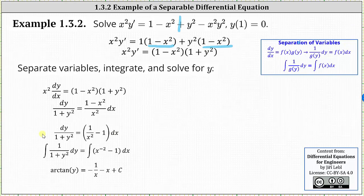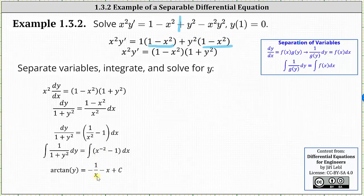Now we integrate both sides. Writing one divided by x squared as x to the power of negative two, the antiderivative of one divided by the quantity one plus y squared with respect to y is arctangent y. On the right, the antiderivative of x to the negative two minus one with respect to x is x to the negative one divided by negative one, or negative one divided by x minus x plus a constant C.